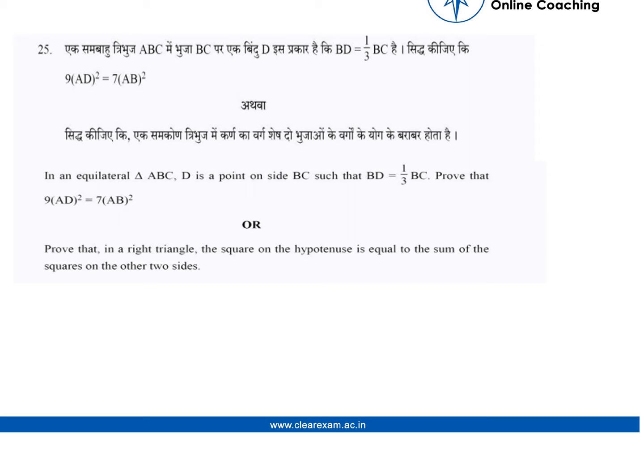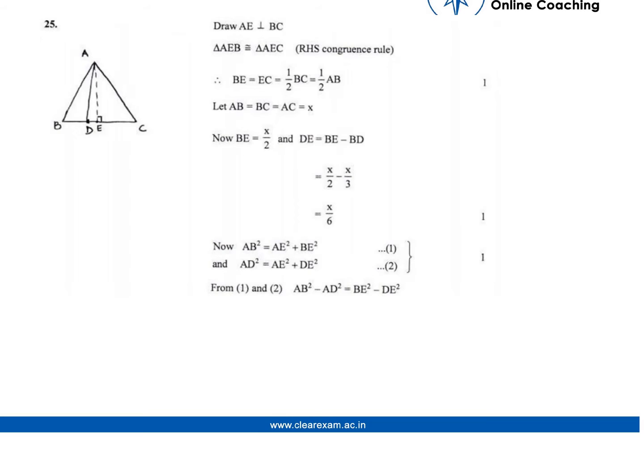In the question, we have an equilateral triangle ABC where D is a point on the side BC such that BD equals 1/3 of BC. We have to prove that 9AD² equals 7AB². In this figure, D is a point on the line BC.